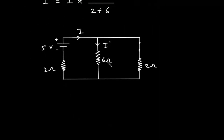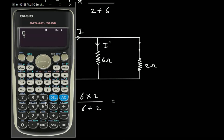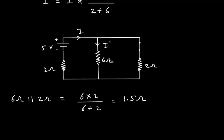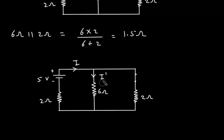We can see that the 6 ohm is in parallel with the 2 ohm. So 6 ohm parallel with 2 ohm gives 6 into 2 divided by 6 plus 2, which equals 1.5 ohm. Now we will replace these two resistors with a single 1.5 ohm resistor.